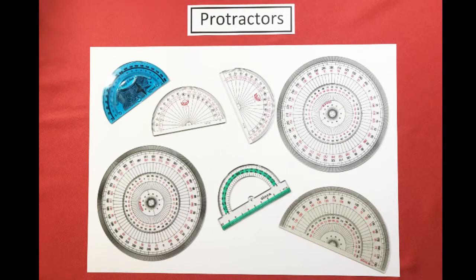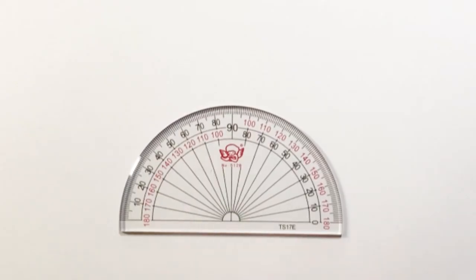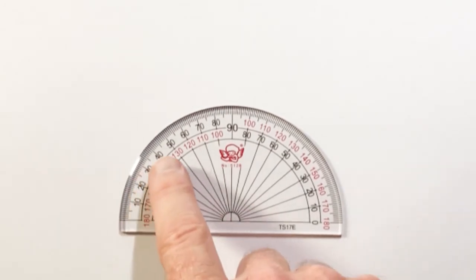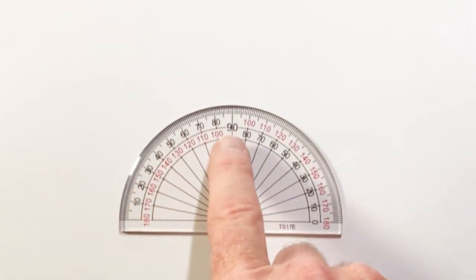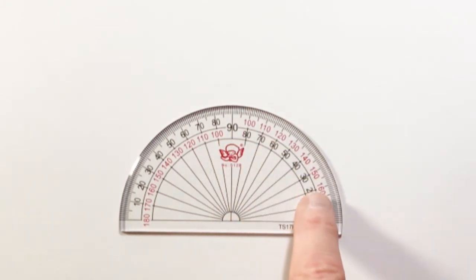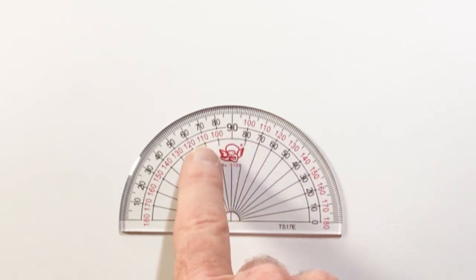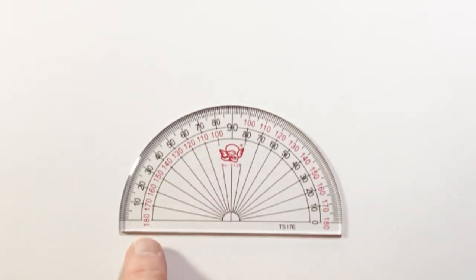So these are the devices I use to measure angles. And the big one measures a full 360 degrees in a full turn. But the one you probably have looks like this, which has two scales.